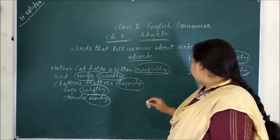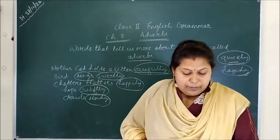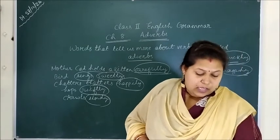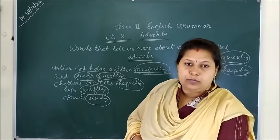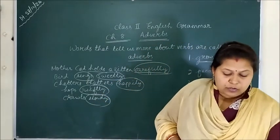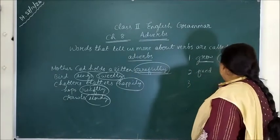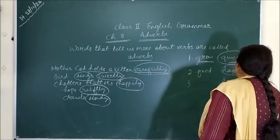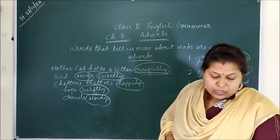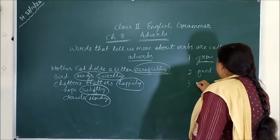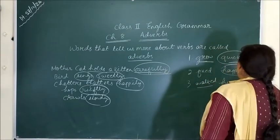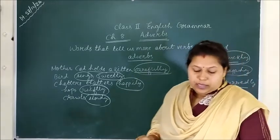Question number 3: The rabbit hurriedly walked past Alice. So 'hurriedly walked' — 'walked' means to go walking. How did it go? Quickly, hurriedly. So 'hurriedly' is your adverb. 'Walked' is your verb, and 'hurriedly' is your adverb.